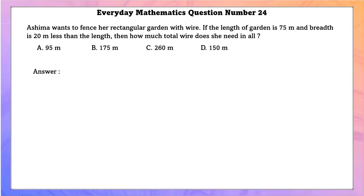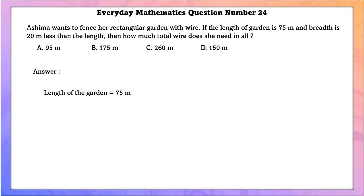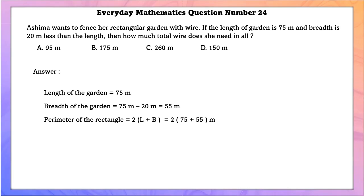Everyday Mathematics question number 24. Ashmiha wants to fence her rectangular garden. The length is 75 meters and the breadth is 20 meters less than the length, so breadth = 55 meters. Perimeter = 2 × (75 + 55) = 260 meters. Total wire needed is 260 meters.